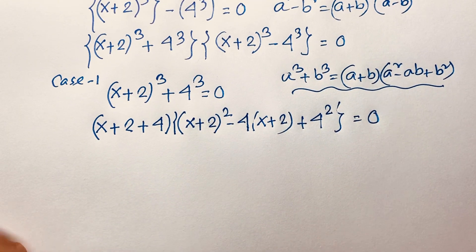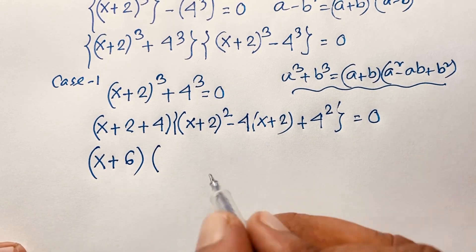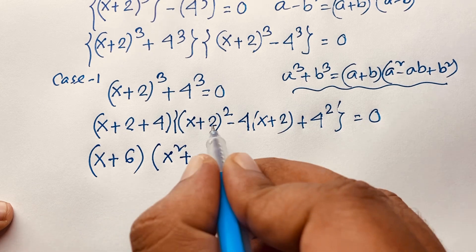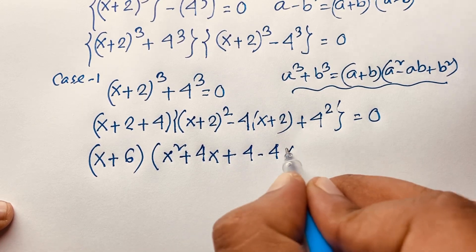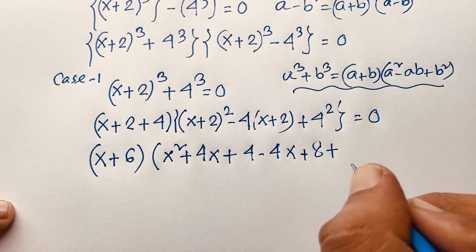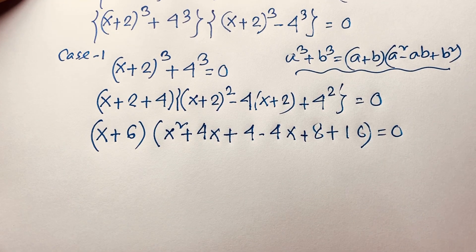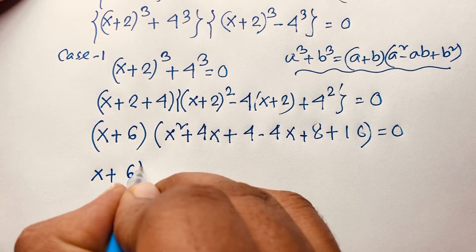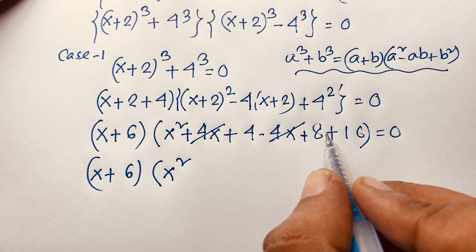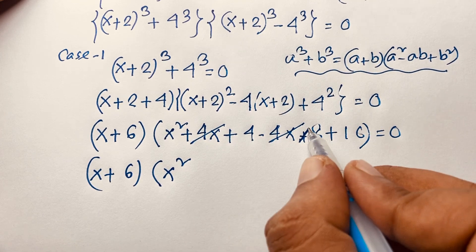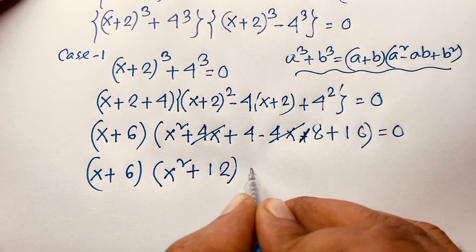Expanding: x + 2 + 4 = 6, so the first factor is (x + 6). For the second factor, using (a+b)² = a² + 2ab + b²: (x+2)² = x² + 4x + 4, then −4(x+2) = −4x − 8, plus 16. The 4x terms cancel: x² + 4 − 8 + 16 = x² + 12. So we have (x + 6)(x² + 12) = 0.